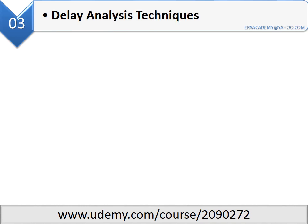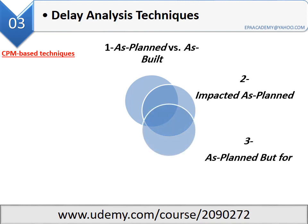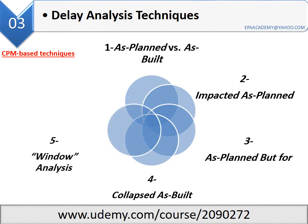The third station is delay analysis techniques. The techniques can be grouped under a static group — techniques not based on the critical path method — and a dynamic group of CPM-based techniques. The CPM-based techniques are: one, as-planned versus as-built; two, impacted as-planned; three, as-planned but-for; four, collapsed as-built; five, window analysis; six, time impact analysis.